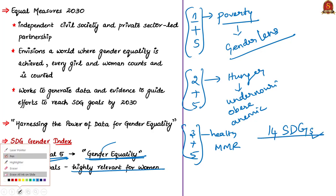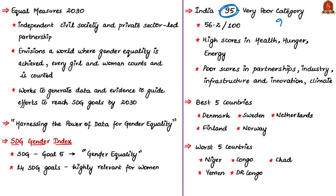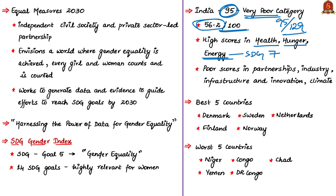In this SDG Gender Index published by Equal Measures 2030, India is ranked at 95 out of 129 countries and placed in the very poor category with a score of 56.2 out of 100. India has scored better or well in the areas of health, hunger and energy — energy under SDG goal number 7 relating to women's access to clean and conventional energy. India has performed poorly in areas of partnerships — SDG goal number 17 — which covers how much the government spends for women, budget allocation, and transparency of gender statistics.